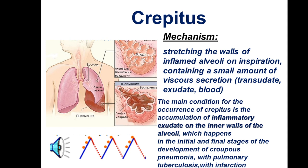Crepitations are caused by the stretching of the walls of inflamed alveoli on inspiration, with a small amount of viscous secretion, transudate, or exudate. The main condition for the occurrence of crepitations is the accumulation of inflammatory exudate on the inner wall of the alveoli, which happens in the initial and final stages of lobar pneumonia, pulmonary tuberculosis, and infiltration pneumonia. Crepitations may also be caused by left heart failure due to accumulation of exudate and edematous alveolar walls opening during the inspiratory phase — heard at the peak of inspiration as a creepy sound.